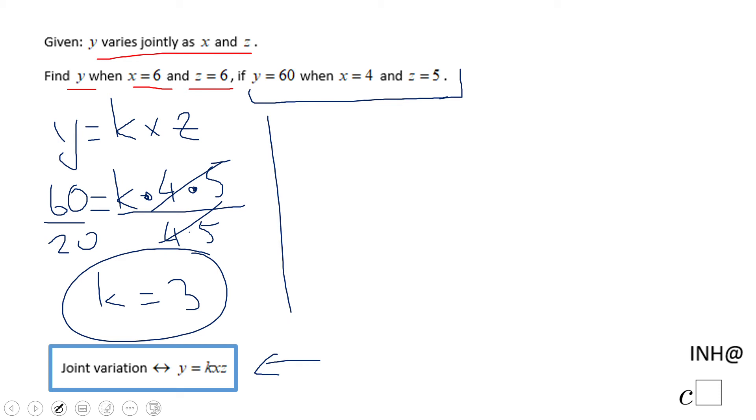First, we're gonna replace K in the equation, so we have Y equals 3 times X times Z. And now we're gonna find Y. Again, when X is 6 and Z is 6.